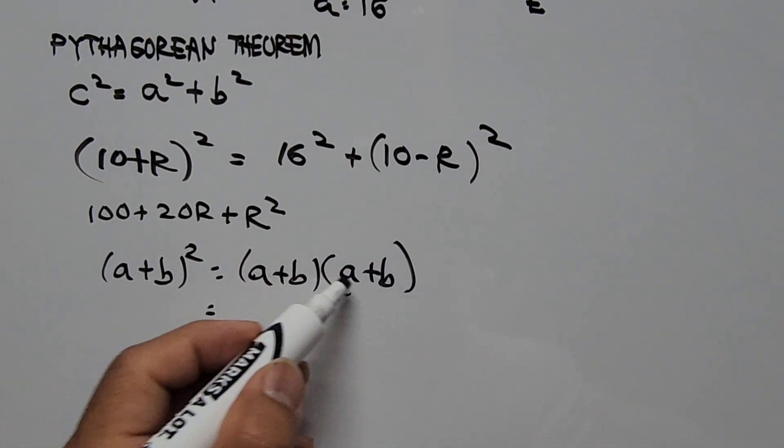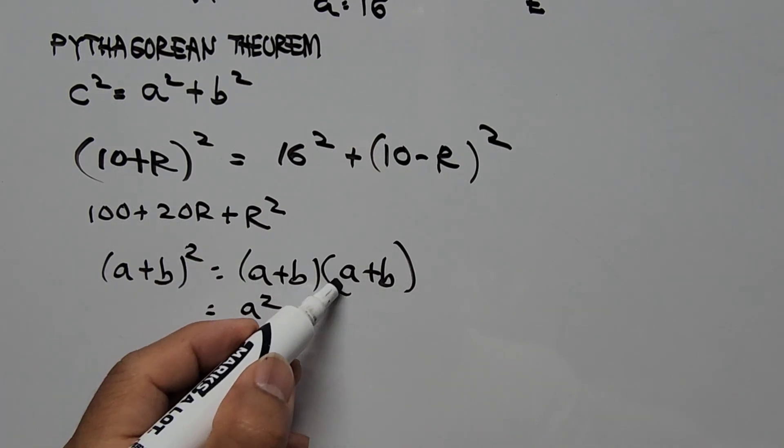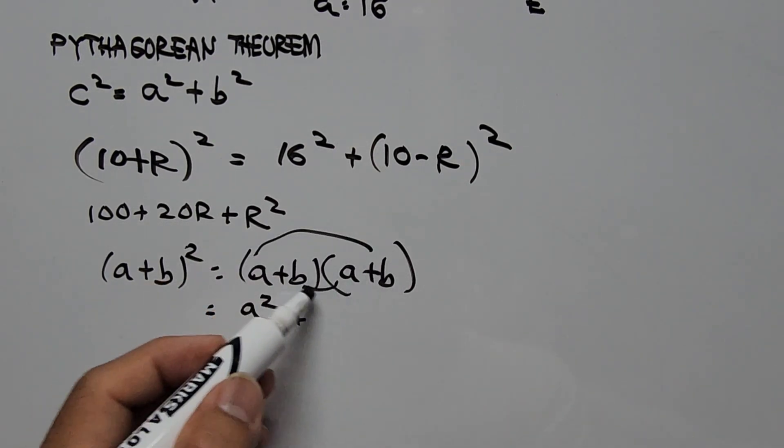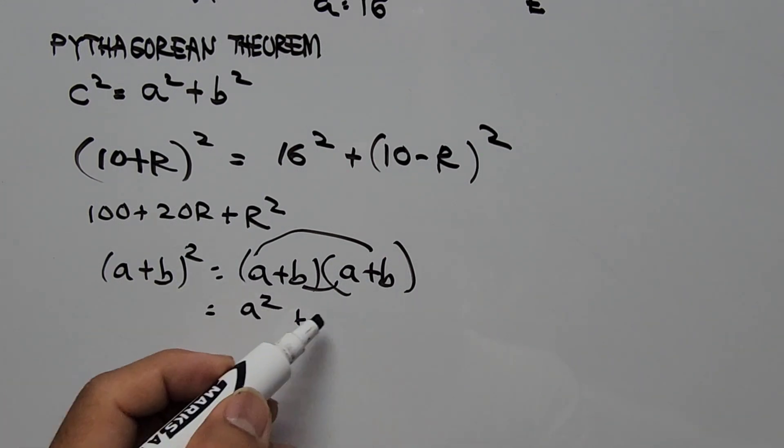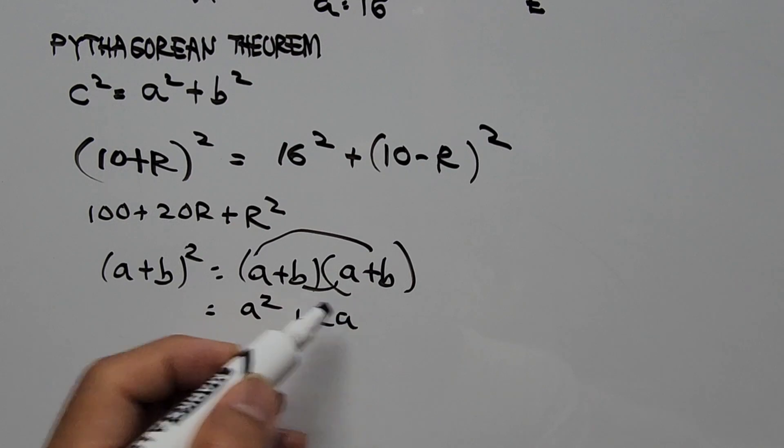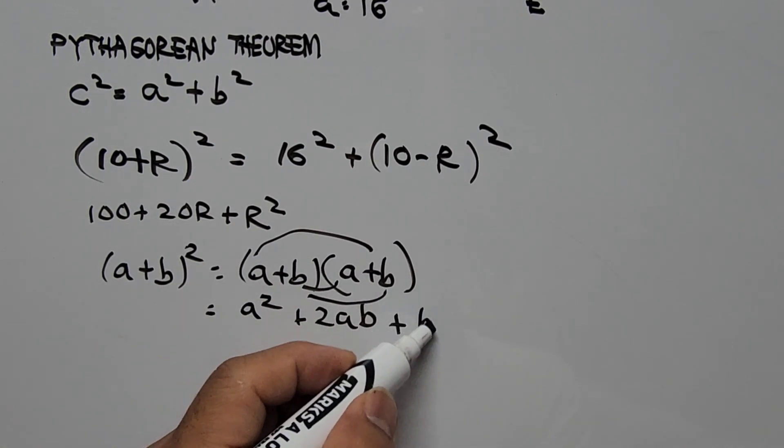That is A plus B squared is the same way as A plus B times A plus B. So here A times A is A squared plus A times B plus A times B, so that's plus twice, 2 times AB, then plus B times B, that's B squared.